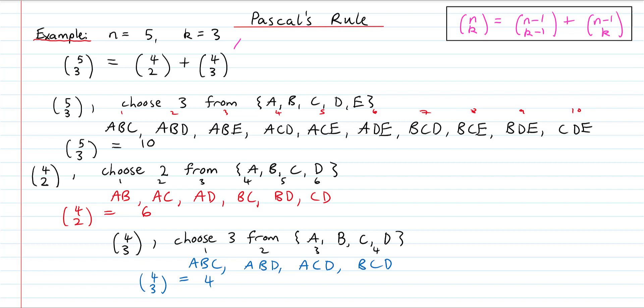Coming back to our equation and plugging in everything: on the left hand side, 5 choose 3 equals 10. On the right hand side, 4 choose 2 equals 6, plus 4 choose 3 equals 4. So the left and right hand sides are equal — Pascal's Rule definitely works for n equals 5 and k equals 3.